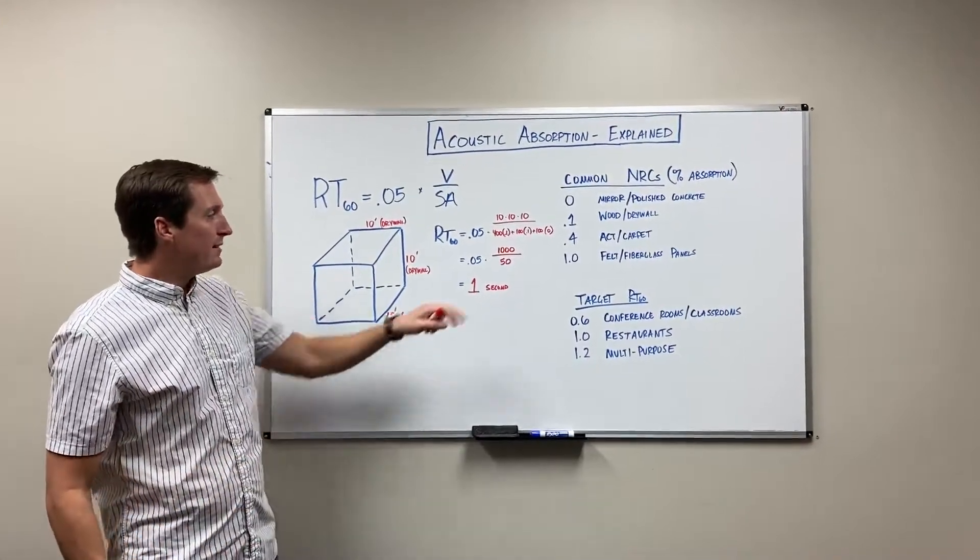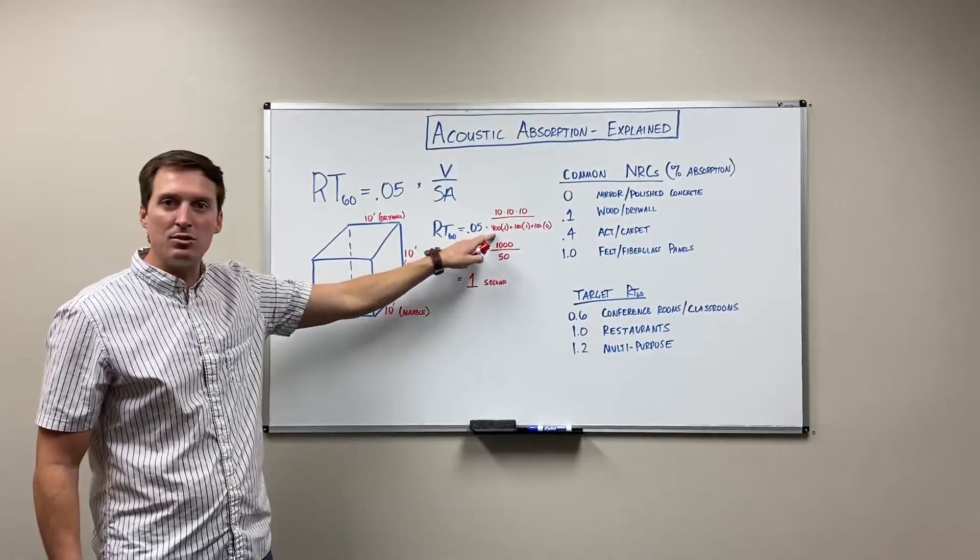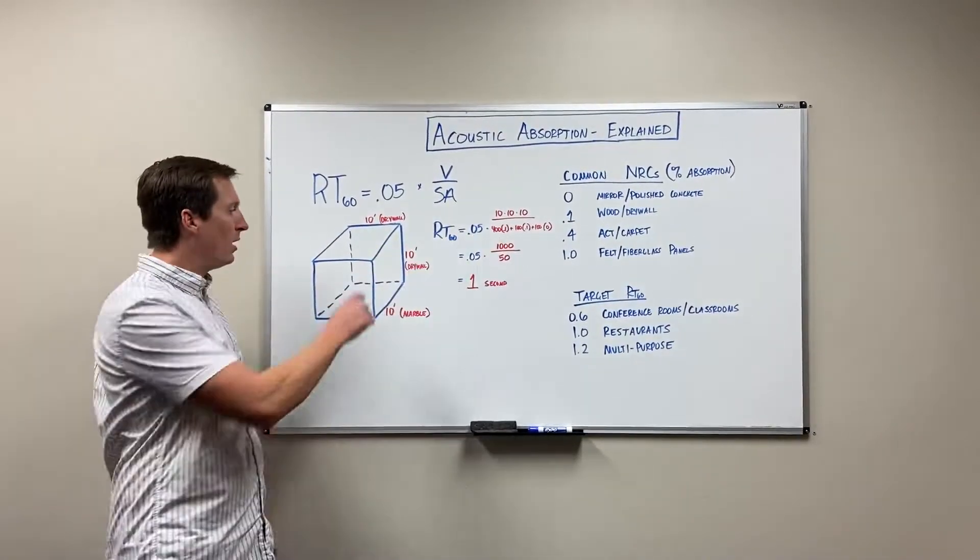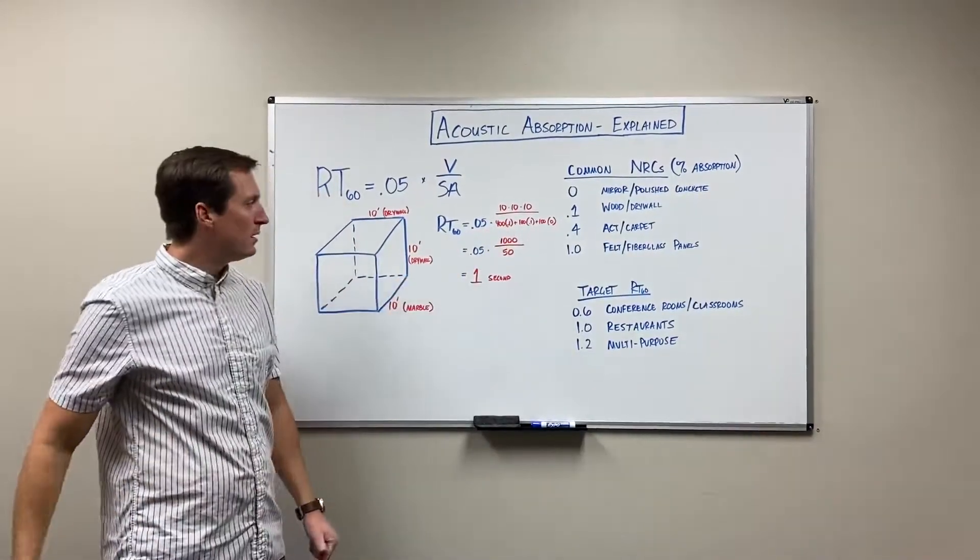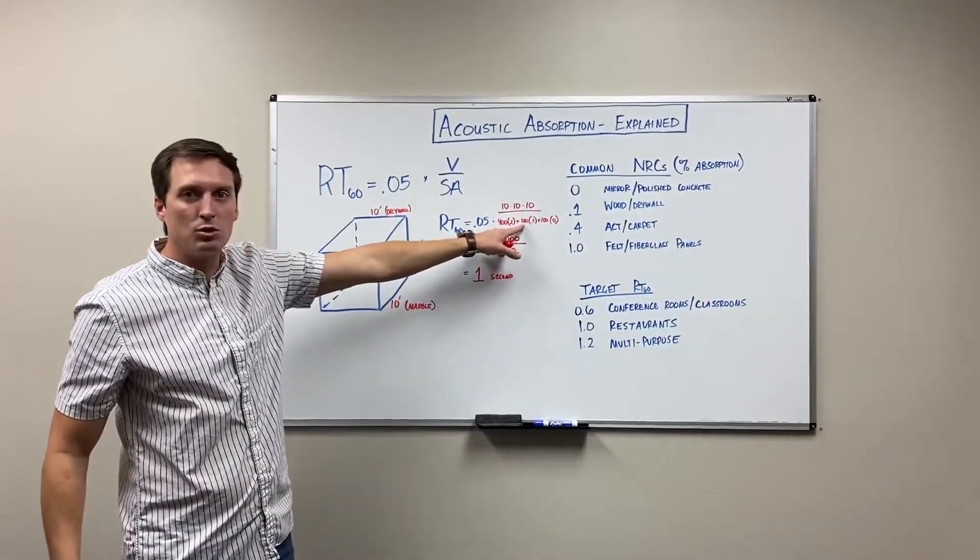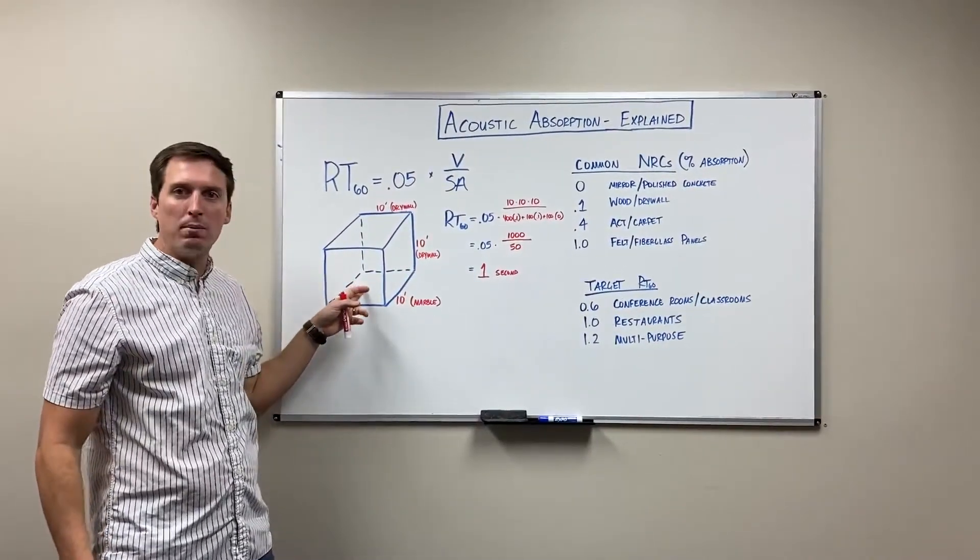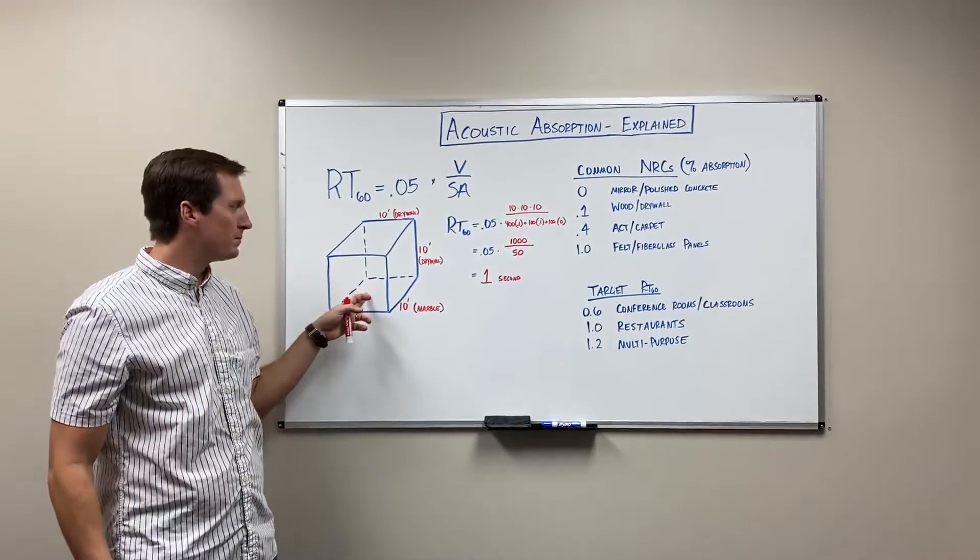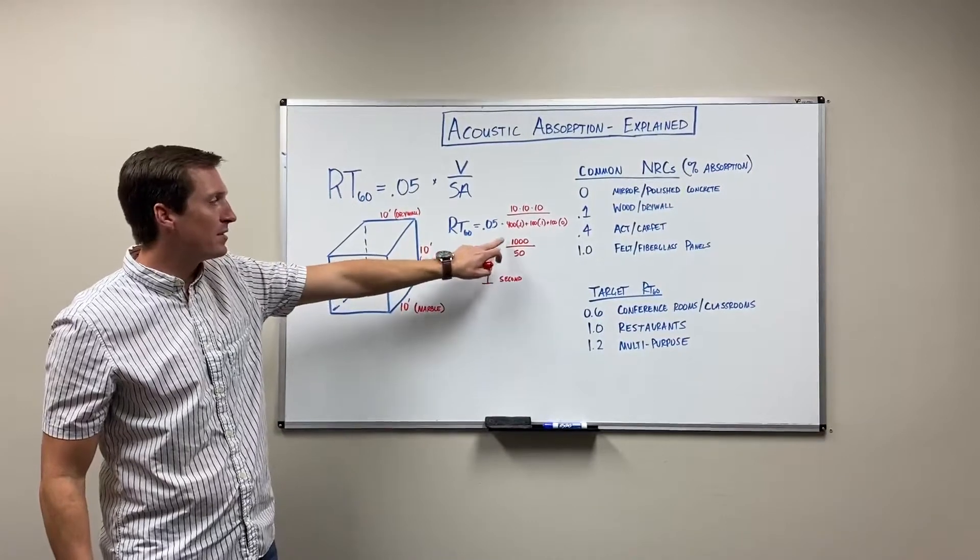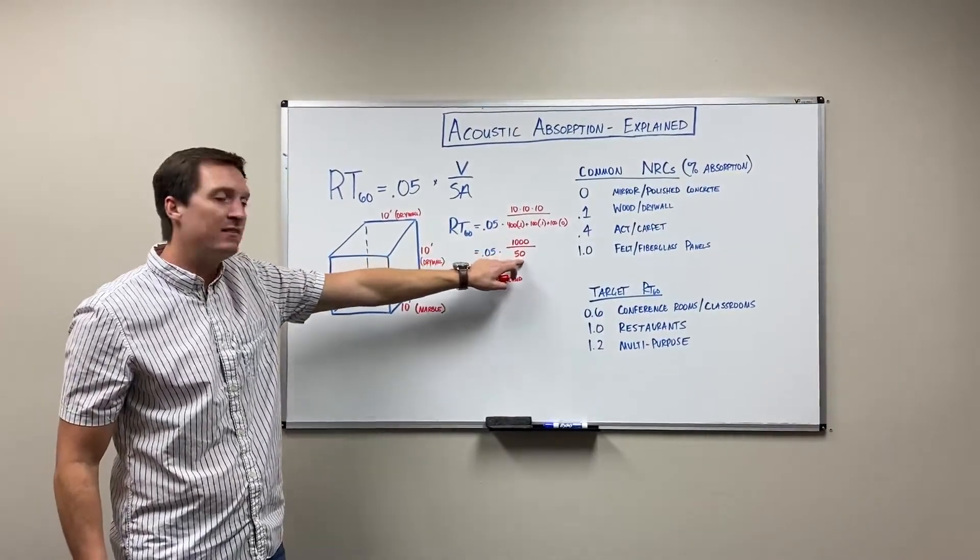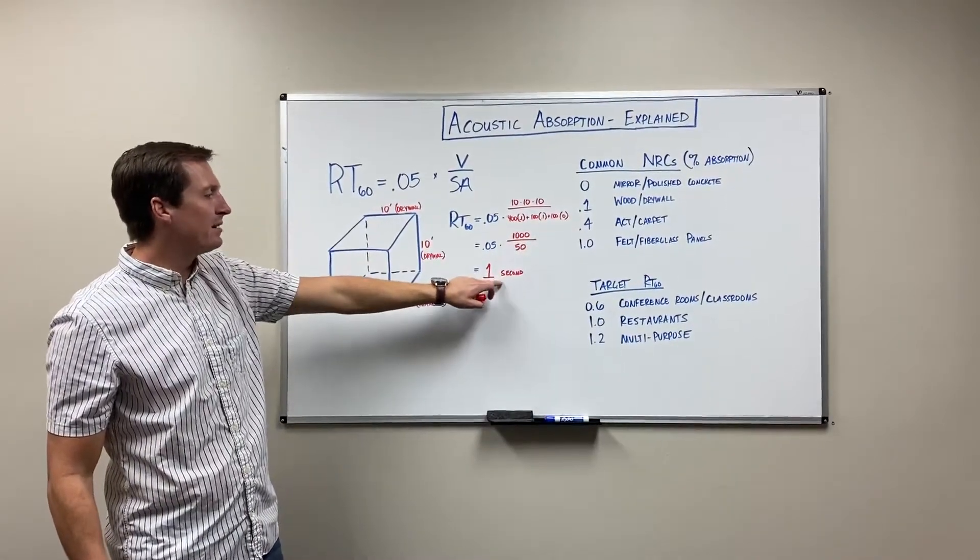So then in the denominator you see the surface absorptive area is 400 for each of the walls - so 100 each and there's four of them times 0.1 for drywall. For the ceiling it's just 100 square feet times 0.1, and then for the floor it's 100 square feet but it's marble or polished concrete with no absorption. And so if you plug in the equation you've got 0.05 times 1,000 cubic feet divided by 50 sabins, and that calculates to 1 second.